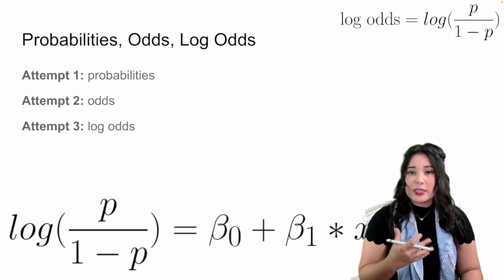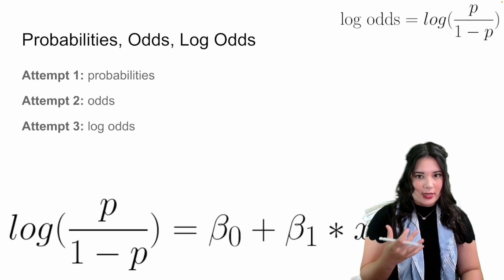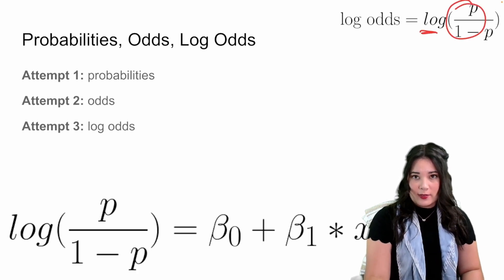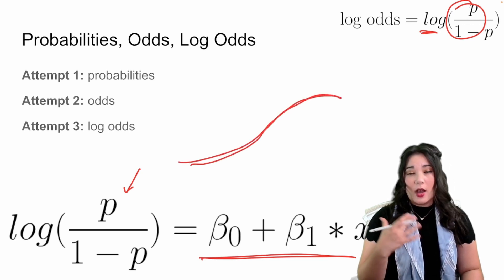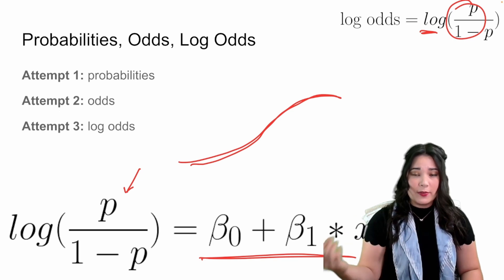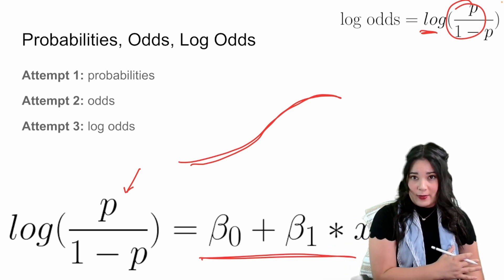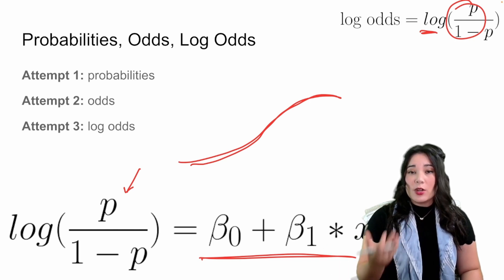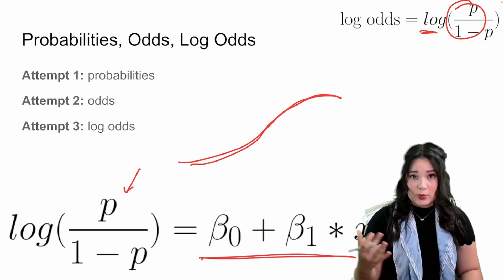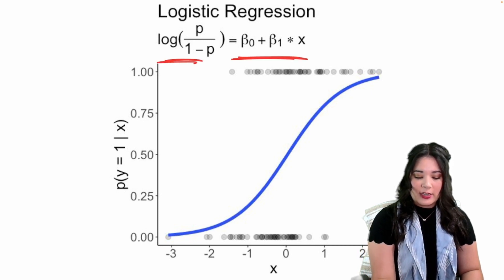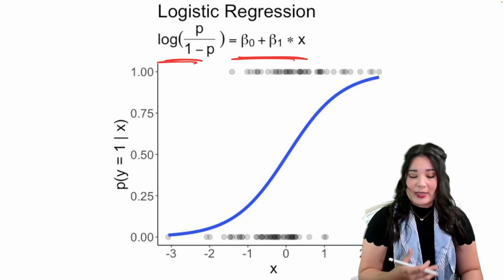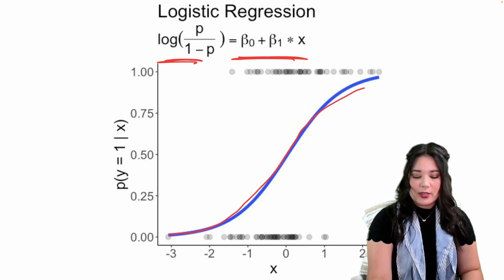One thing we can try is log odds. Log odds are just the log of the odds of an event happening. We can predict the log odds of something happening using a linear regression, and this will get us that nice sigmoid relationship we wanted. Unlike odds, which range from zero to infinity, log odds range from negative infinity to positive infinity, so it's no longer possible for our model to make impossible predictions. When we apply logistic regression, we predict the log odds using a linear regression, but when we transform those back into probabilities, we get a nice non-linear sigmoid-shaped curve.